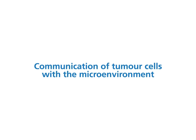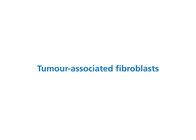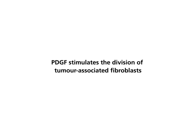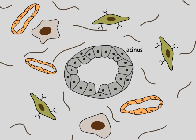Communication of tumor cells with the microenvironment. Tumor-associated fibroblasts are stimulated by PDGF. Epithelial cells make contact with the extracellular matrix (ECM). The acinus of a mammary gland, shown here, is surrounded by connective tissue, which contains cells such as endothelial cells, macrophages, and fibroblasts.